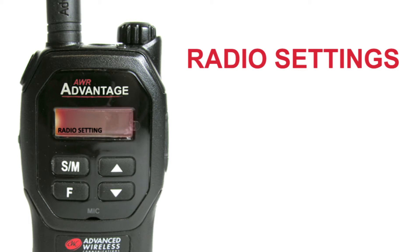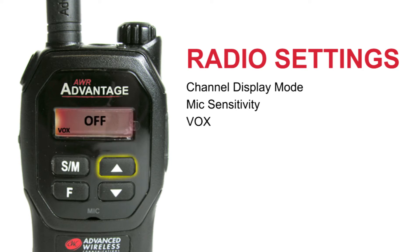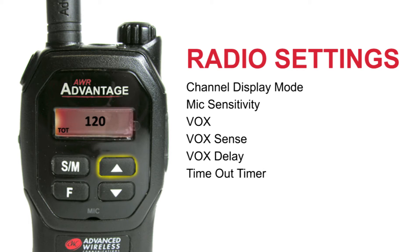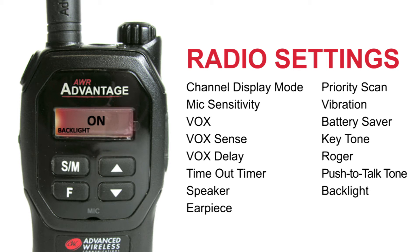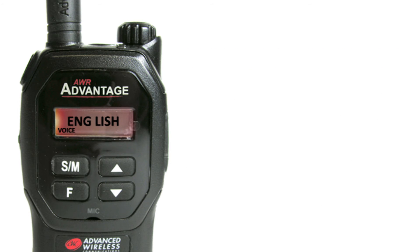Let's begin with the radio settings. With radio settings displayed, press the SM key. Under the radio settings menu, you will find the channel display mode, mic sensitivity, VOX, VOX sense, VOX delay, time out timer, speaker, earpiece, priority scan, vibration, battery saver, key tone, roger, push to talk tone, back light, and voice. To select a subcategory to change the setting, press the SM key. The current display mode will begin to flash, meaning you can now use the up and down keys to select the desired setting. Press the SM key to select. Use the up and down keys to choose another subcategory, or use the up key to return to the main menu.